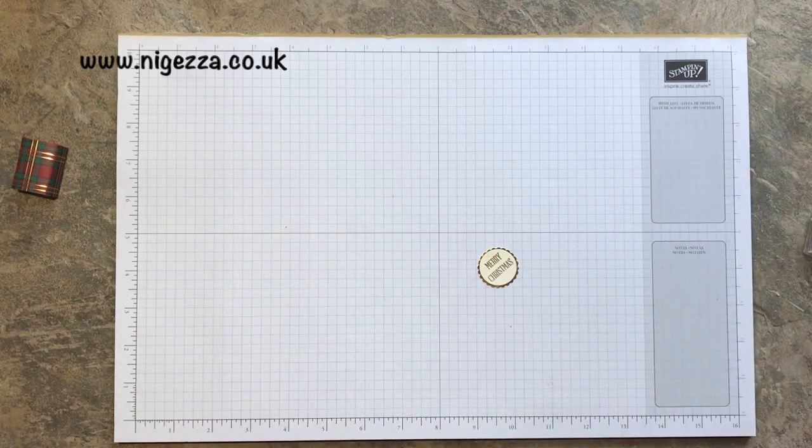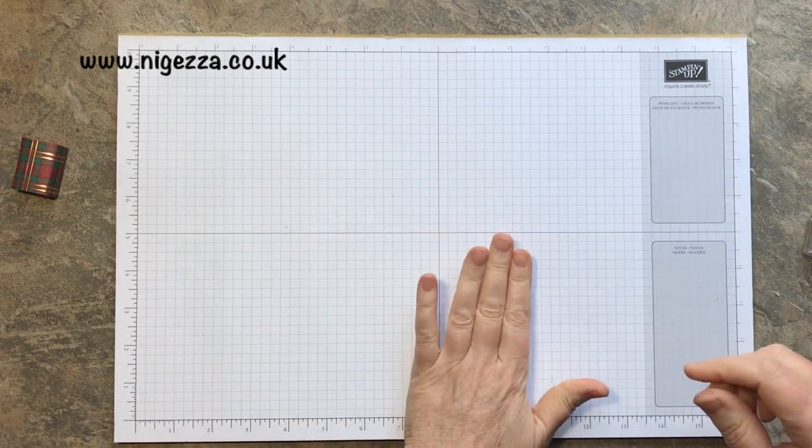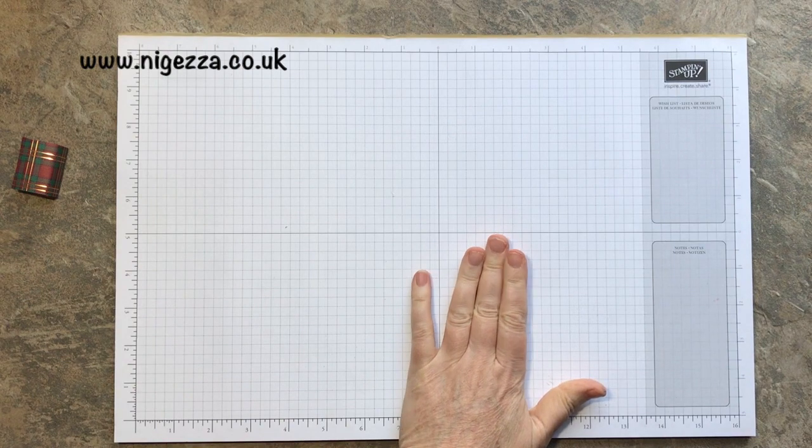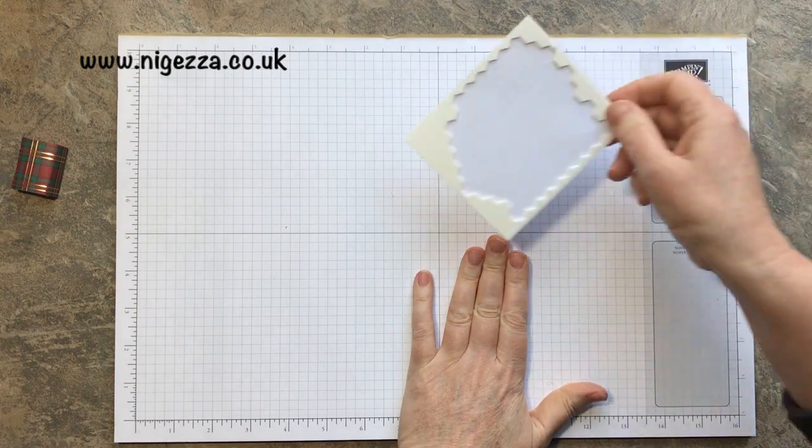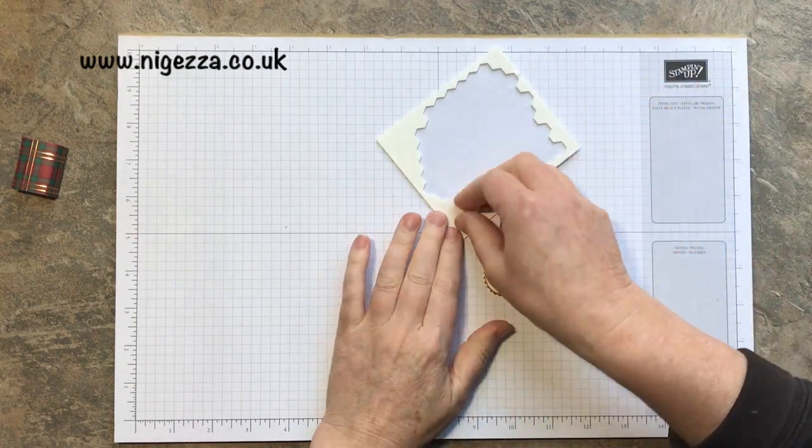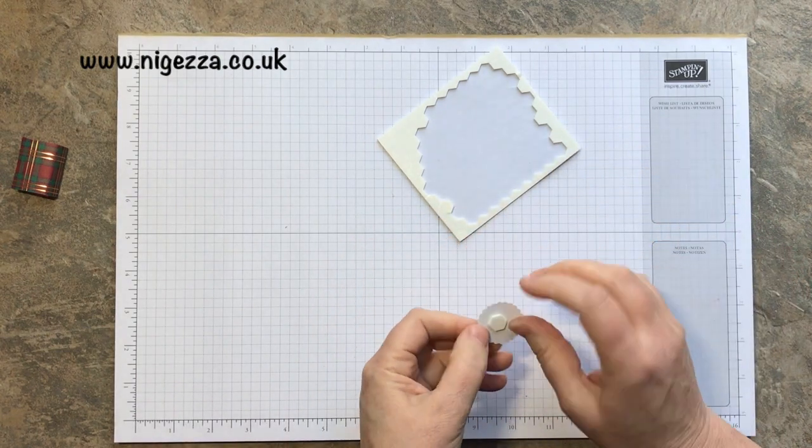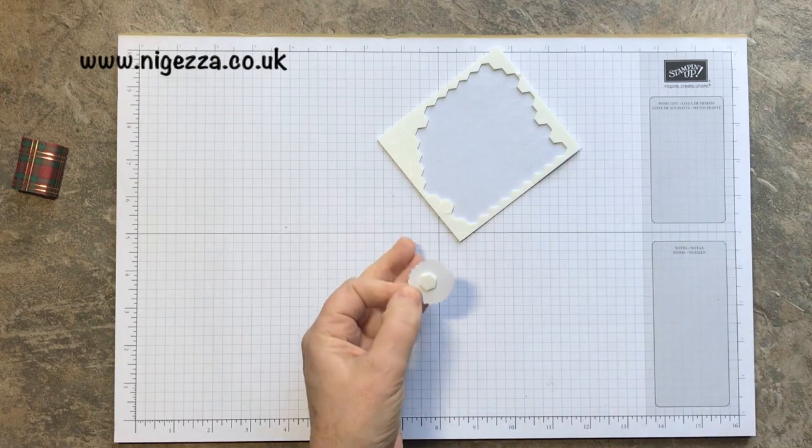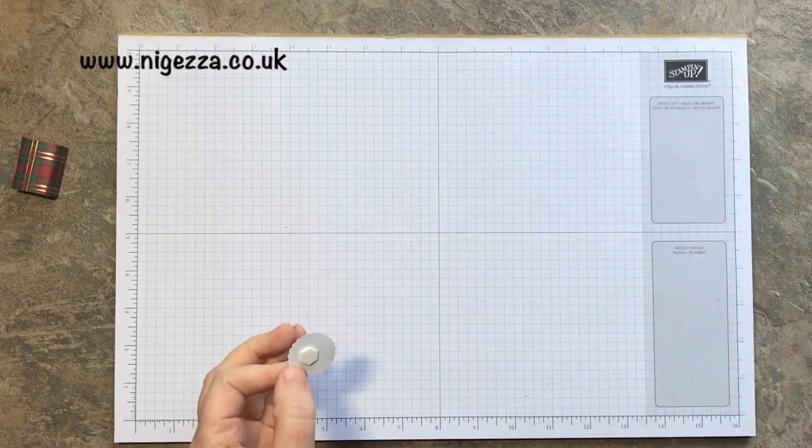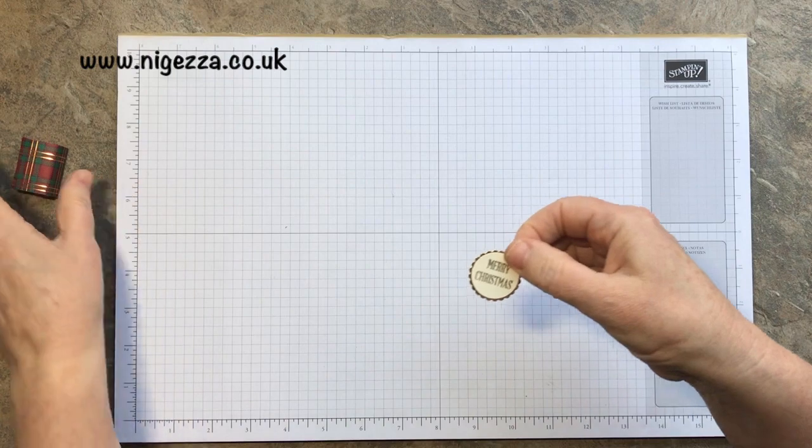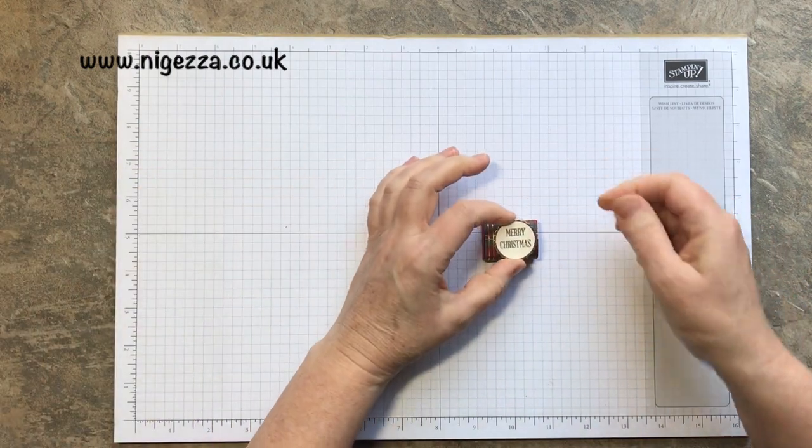I'm going to use Tombow to give that a little hold in place. Foil does tend to twist a bit until it's stuck down. Then I'll put dimensional adhesive on the back and stick that on top.